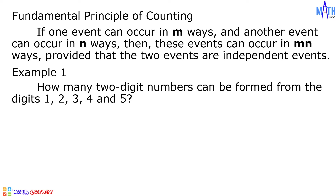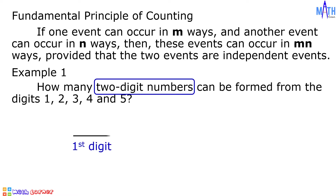The two independent events in forming the two-digit numbers are: number one, choosing the first digit, and number two, choosing the second digit. For the first digit, there are five options — it is either 1, 2, 3, 4, or 5. For the second digit, there are also five options.